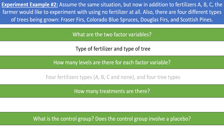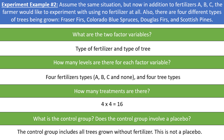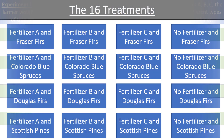The two factor variables are type of fertilizer and type of tree. Each of these are being imposed by the researcher — the researcher determines both which fertilizer to use and which type of tree to plant. There are four fertilizer levels: A, B, C, and none; and there are four different types of trees. This means that there are a total of 4 times 4 equals 16 different treatment combinations. You can see here are all 16 different treatment combinations.